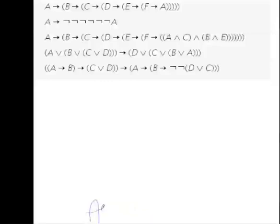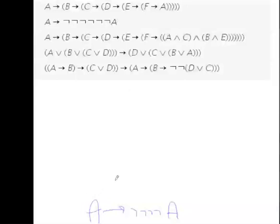Now let's do question two. I will do it in a simpler version — I'll do one with only four negations in front of A instead of six, but you are highly recommended to do the one with six, both in JAPE and by hand. This is really an exercise in repeated use of not introduction and not elimination.